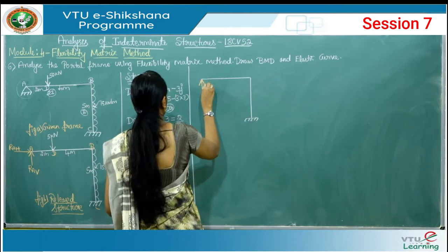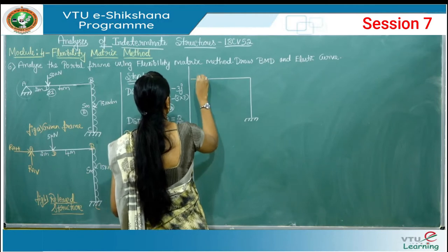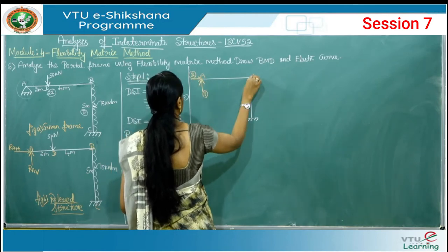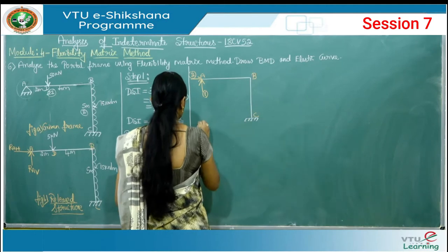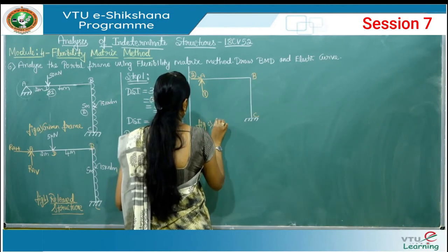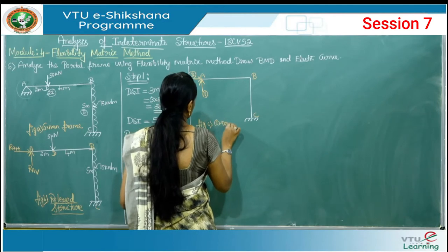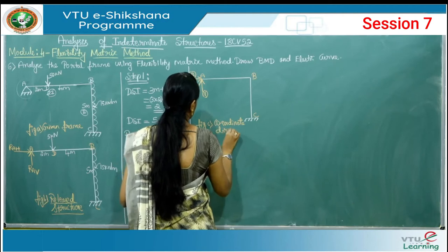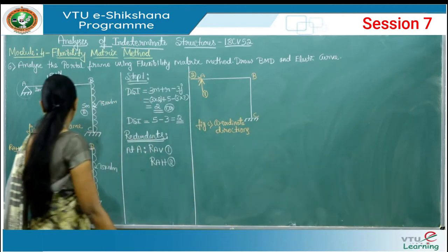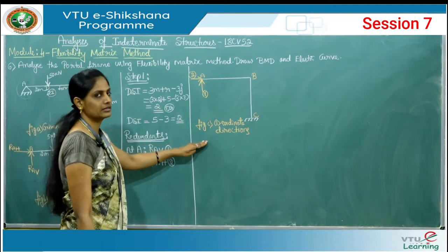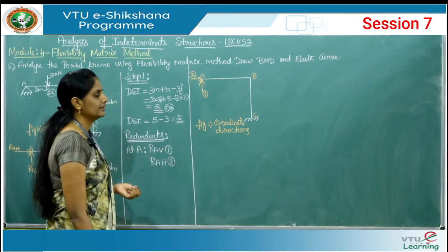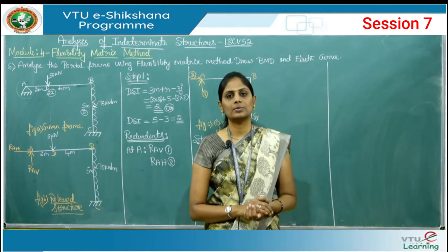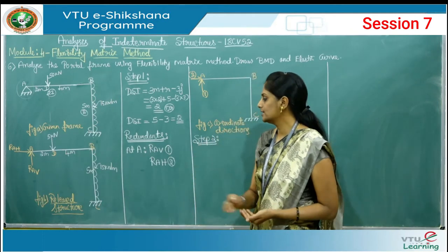We can mark the coordinate directions in a separate Figure C: coordinate number 1 (vertical) and coordinate number 2 (horizontal). You may mark the directions directly on Figure B by labeling RAv as 1 and RAh as 2, or draw a separate diagram. In step number 2 we apply the unit load method to find RAv and RAh.